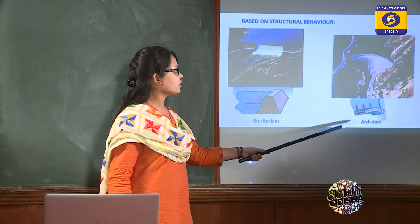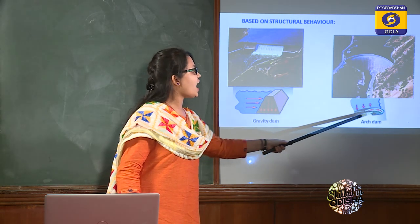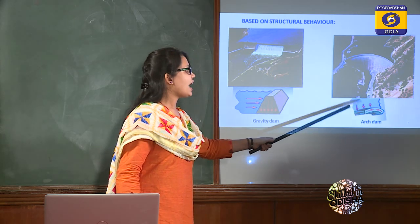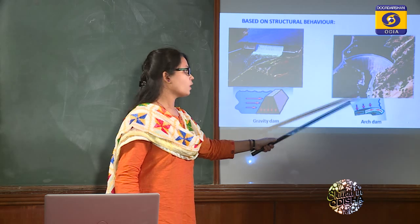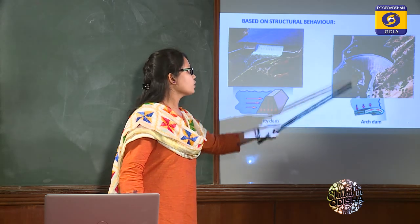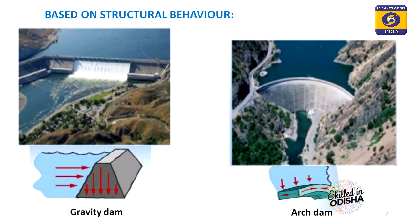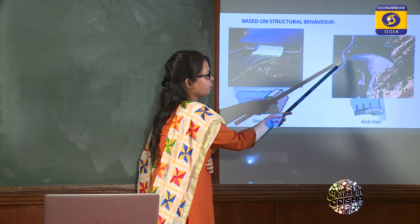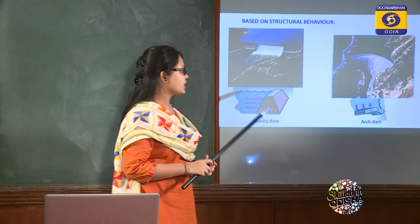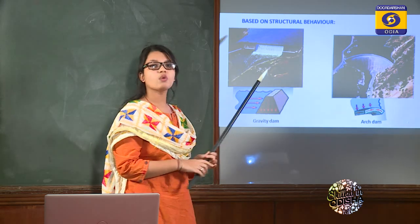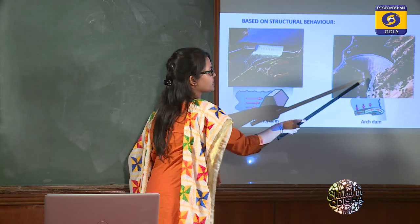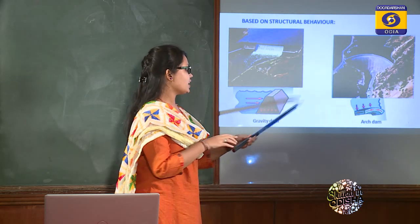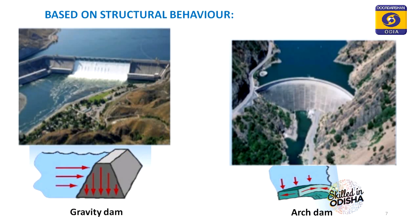The arch dam is similar to the gravity dam, but with the key difference that a curved wall is used and the forces due to water are resisted by arch action. The water pressure force is transferred to the abutments or supports. A condition for arch dam construction is that the abutments must be very strong, and it can only be constructed in narrow or V-shaped valleys. For broader valleys, a gravity dam is preferred.